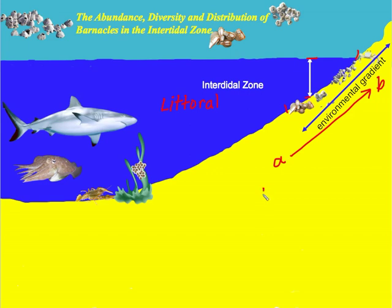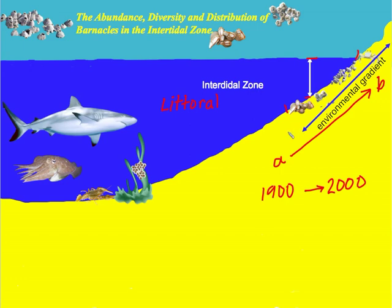An environmental gradient can also refer to a change in abiotic factors over time. If an area changes between 1900 and 2000, that too can be referred to as an environmental gradient. But more often, an environmental gradient refers to change over space — such as from the foothills of a mountain to its top, or from the low tide point to the high tide point across the intertidal zone.